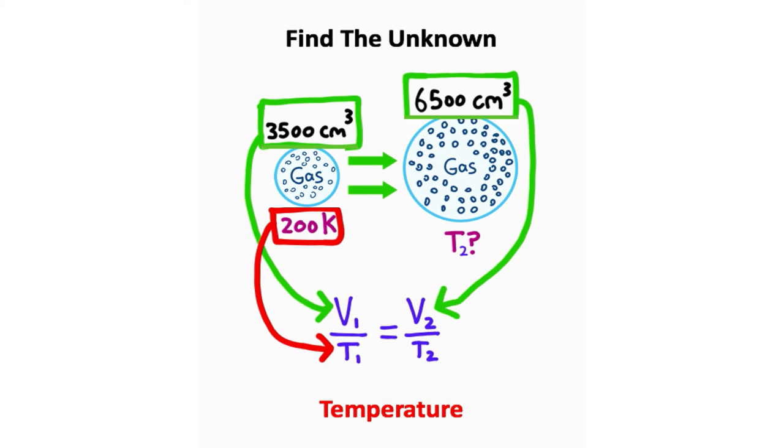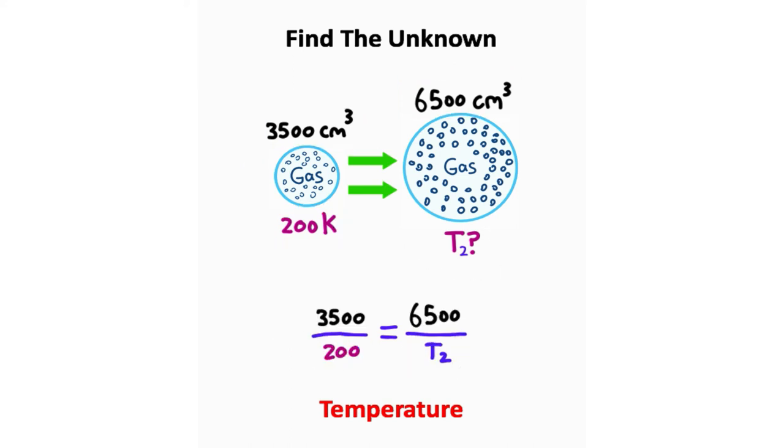So if I go ahead and plug all the variables in that I see, I just need to solve for T2. And this is just algebra at this point. So what I'll do is I'll take the T2, multiply on both sides, that'll get those to cancel, and I'll go ahead and reduce this fraction 3,500 over 200. That's going to give me 17.5. I divide 17.5 on both sides, and 6,500 divided by 17.5 is approximately 371 degrees Kelvin. So that's the temperature of our gas at a 6,500 cubic centimeter volume.